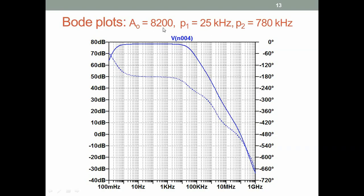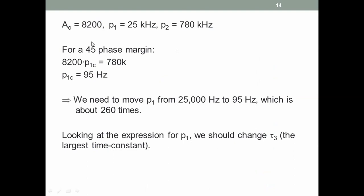We want to make the amplifier stable by making P2 the unity gain frequency. Currently the gain at P2 is about minus 40 dB, so we need to bring it down to 0 dB. For a 45 degree phase margin, gain times the modified dominant pole location P1C must equal 780 kilohertz, which gives P1C equal to 95 hertz. Currently it is 25,000 hertz, so we need to reduce the dominant pole by a factor of about 260.